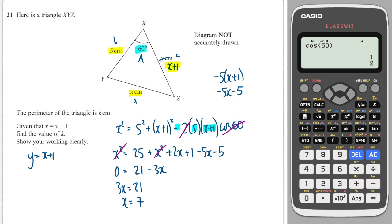And now I just need to work out the perimeter which is k. So I have x is 7 so 7 down here. This is x plus 1 so that's 8. And this is 5. So it's 7 plus 8 plus 5 which is equal to 20 centimeters.